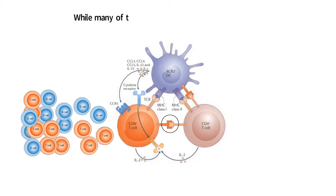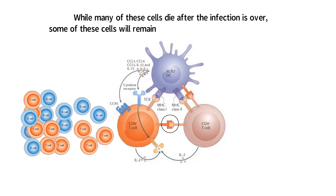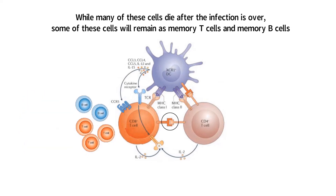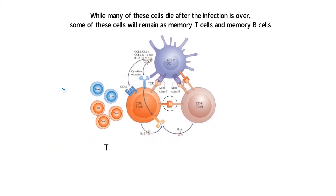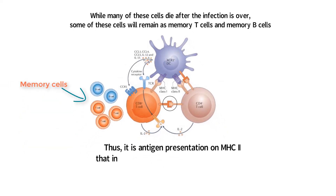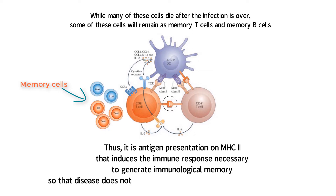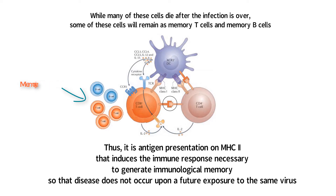While many of these cells die after the infection is over, some of these cells will remain as memory T cells and memory B cells. Thus, it is antigen presentation on MHC-2 that induces the immune response necessary to generate immunological memory so that disease does not occur upon a future exposure to the same virus.